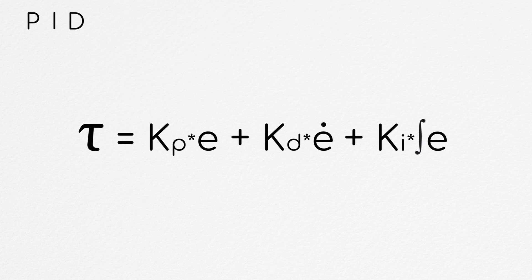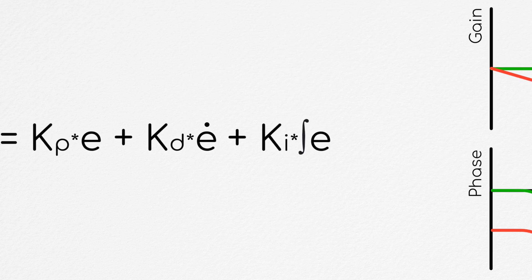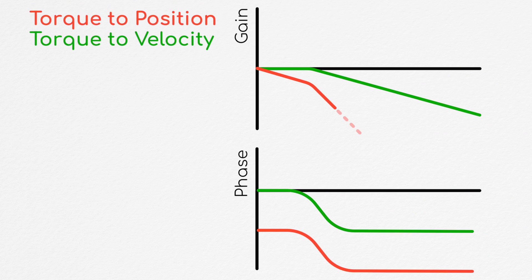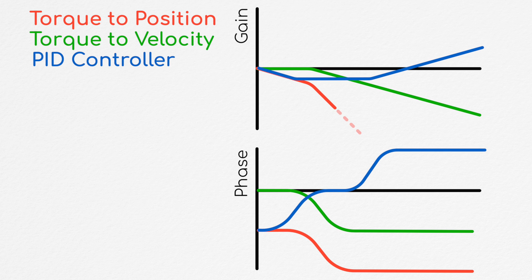However, there can be another issue here in practice sometimes, having to do with this derivative term and system noise. Since our torque-to-velocity system is first-order as compared to our second-order torque-to-position controller, the added zero associated with the derivative control term can cause high-frequency noise to be filtered out less.